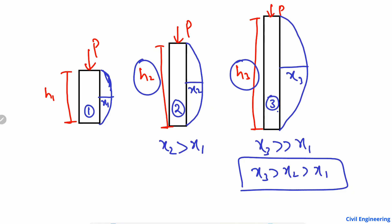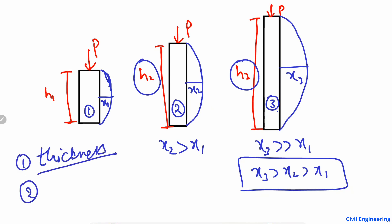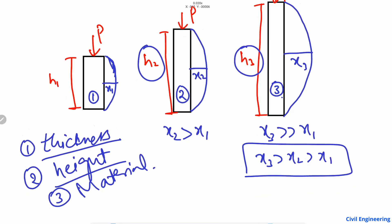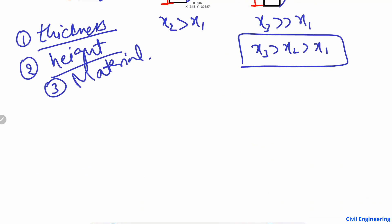In longer columns, this confirms that it is not only the thickness that determines buckling, but also the height of the column that plays a role in buckling of the object.